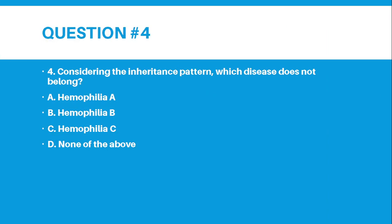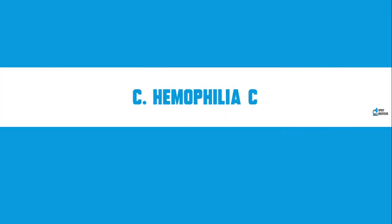Number 4: Considering the inheritance pattern, which disease does not belong? Letter A, Hemophilia A. Letter B, Hemophilia B. Letter C, Hemophilia C. Letter D, None of the above. The correct answer for number 4 is Letter C, Hemophilia C.